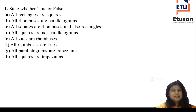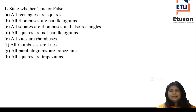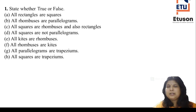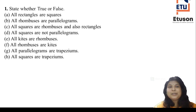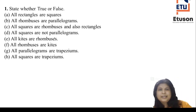We will start from Question 1. You have to state whether the statement given is true or false. The first one: all rectangles are squares. It is false. Why is it false? A rectangle is considered a square only when all the sides of that rectangle are equal. So not all rectangles are squares — this statement is false.